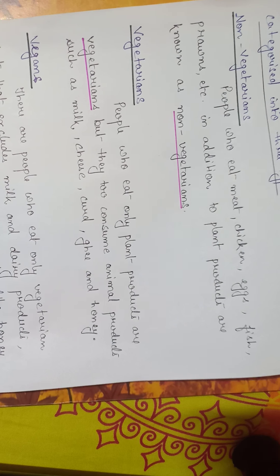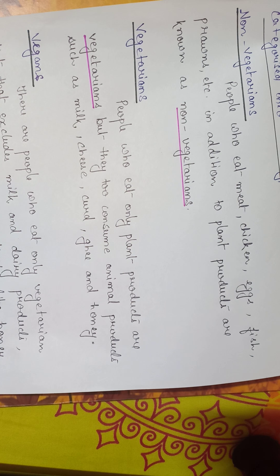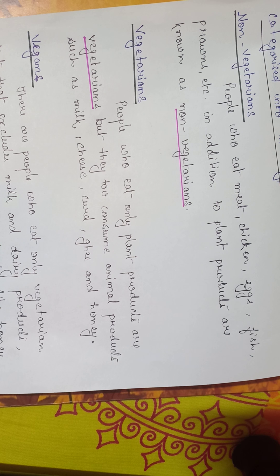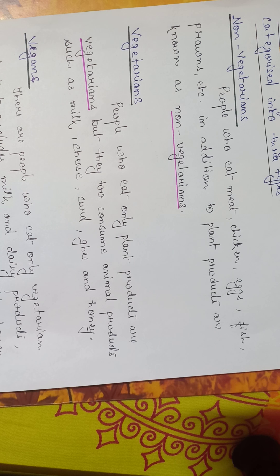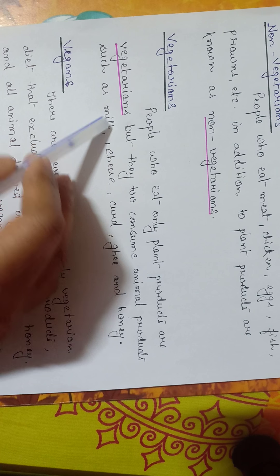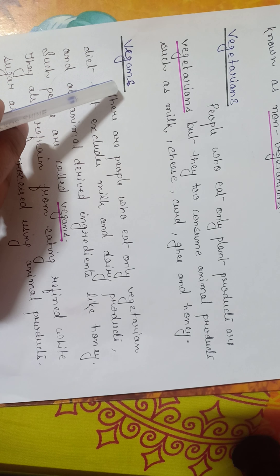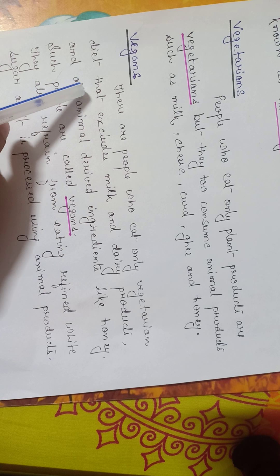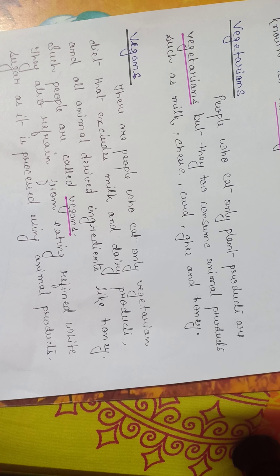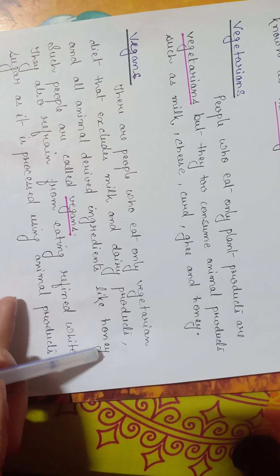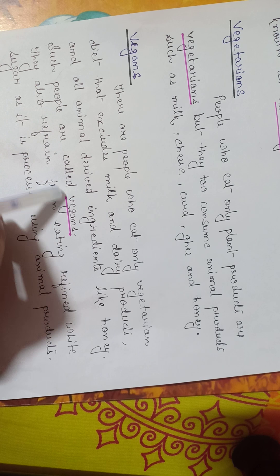Next is vegetarian. People who eat only plant products are vegetarians. But they too consume animal products such as milk, cheese, curd, ghee, and honey. Now, the third group — they are known as vegans (V-E-G-A-N-S). Vegans are people who eat only a vegetarian diet that excludes milk and dairy products, and all animal-derived ingredients like honey.